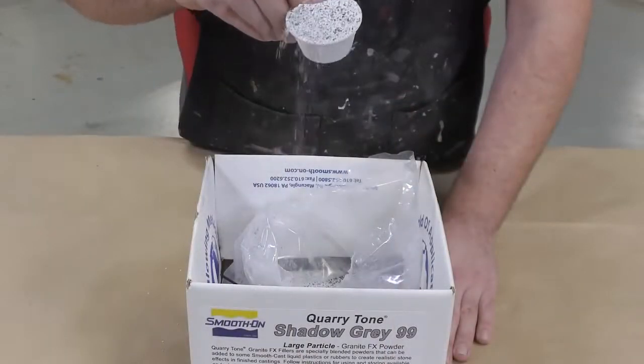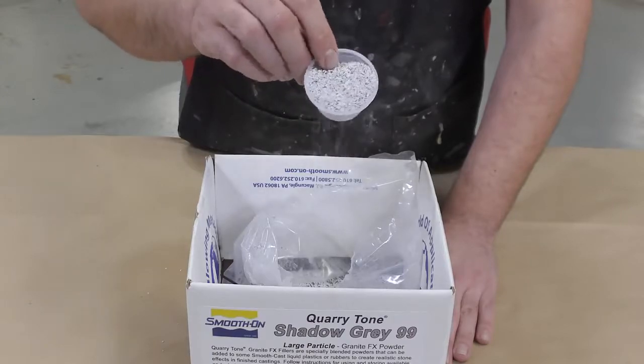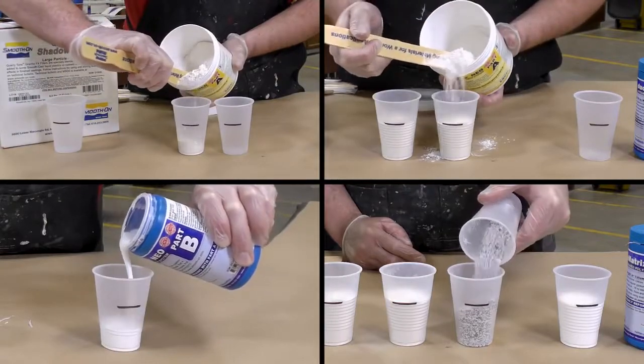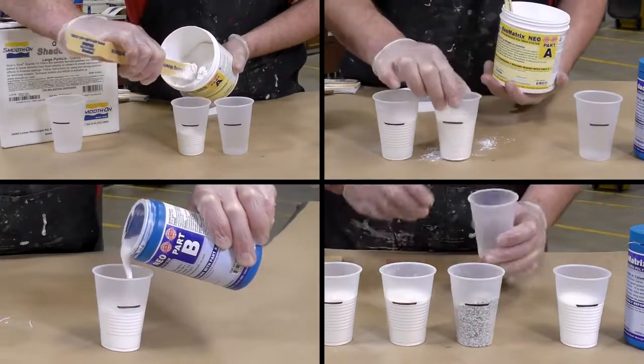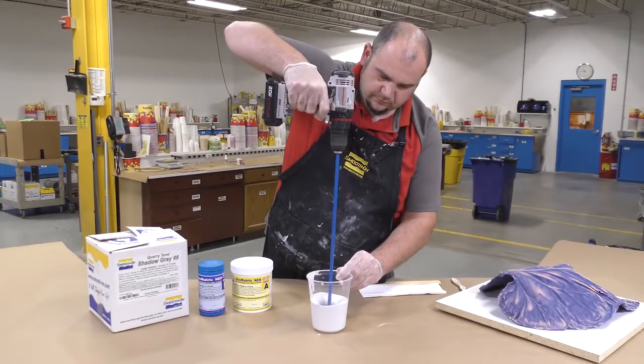To give our casting some stone-like definition, I am going to use the quarry tone shadow gray in the first layer. The Duo Matrix Neo is now dispensed two parts of A to one part of B with the addition of one part of the quarry tone.